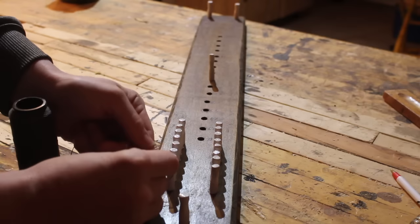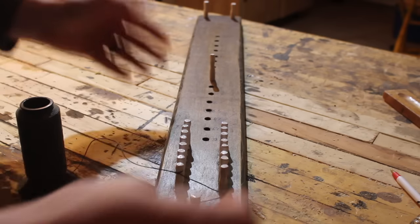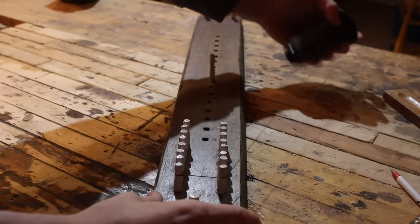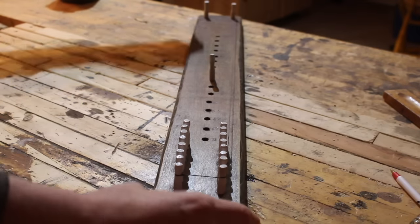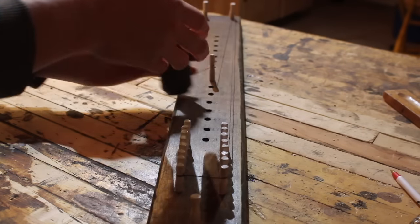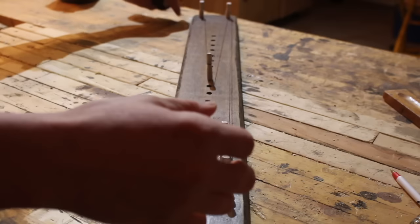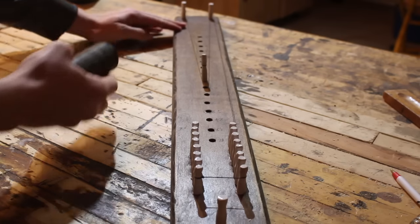Today we are making a 12 strand string which is probably the most common. It pretty much fits all common nock sizes and that's kind of why you want that thickness of the string. So how we're going to accomplish that is we're going to make two bundles of six and twist those together to get our 12 strand string.